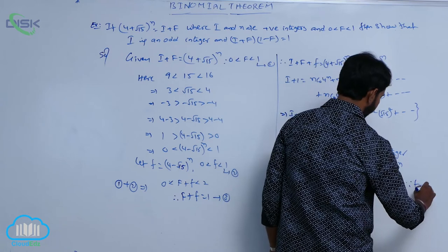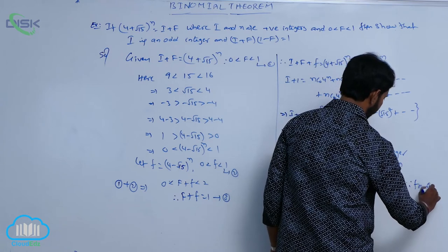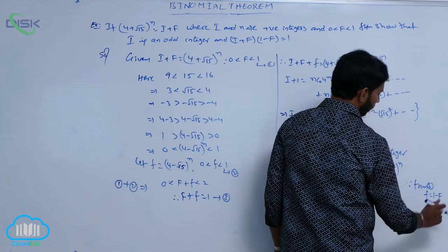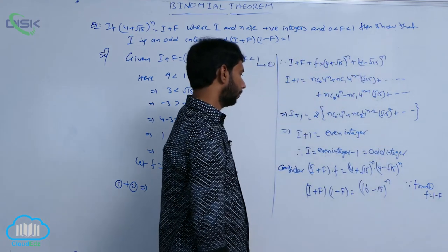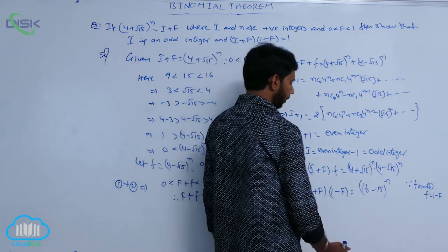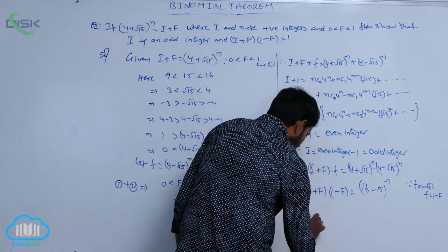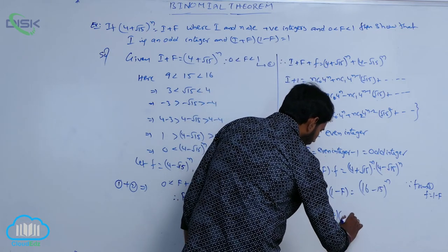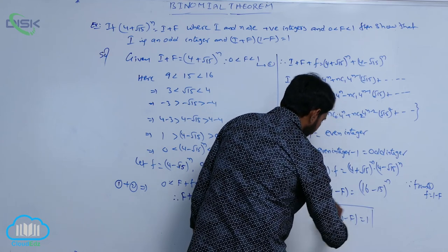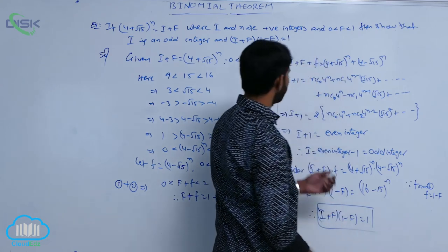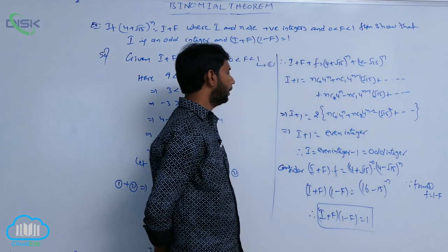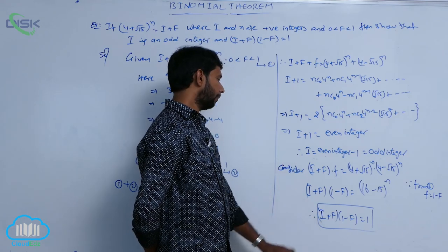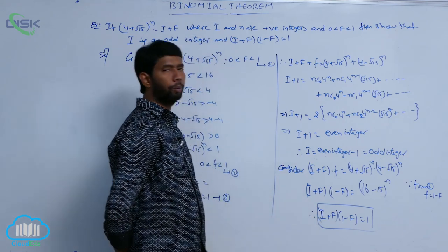Since f' = 1 - f (from condition 3), and 16 - 15 = 1, therefore (i + f)(1 - f) = 1. This is the second result. So we have shown: first, i is an odd integer; and second, (i + f)(1 - f) = 1.